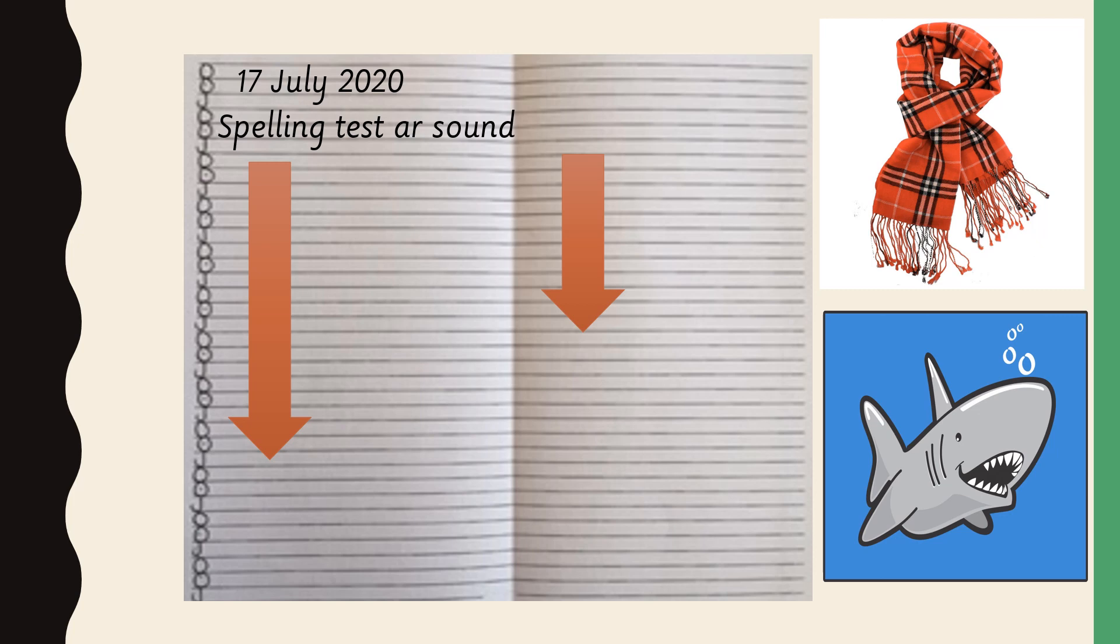Okay, those are your six unseen words. I'll read them to you again. Yard. Barking. Marched. Starlight. Spark. And alarm.